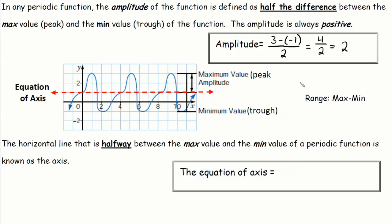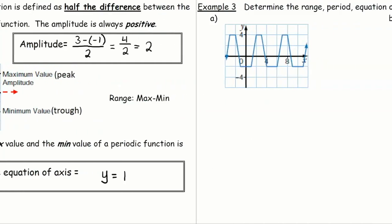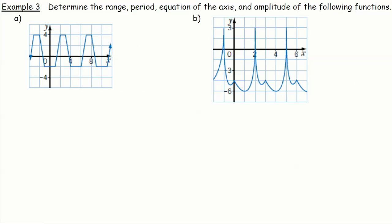The next important definition is the equation of the axis. The axis is the horizontal line that lies halfway between the maximum value and the minimum value of a periodic function. Looking at the function, the axis is the red dashed line running through the center. An equal distance lies above and below the axis. Our amplitude is two, meaning two units from the maximum should be the axis, and two units from the minimum should also be the axis. We state it as an equation: y equals one in this example.